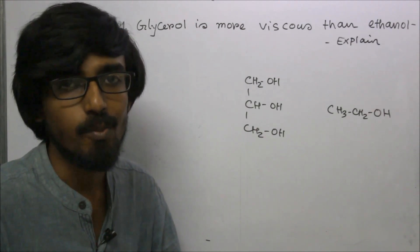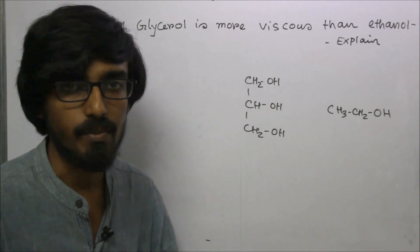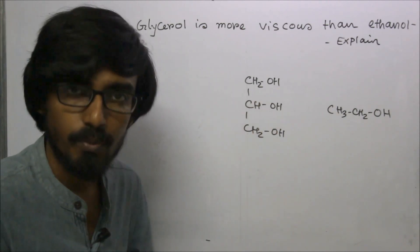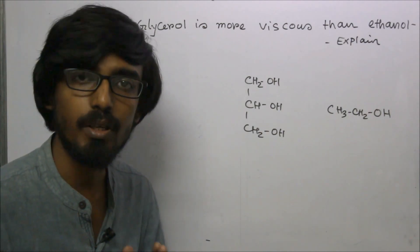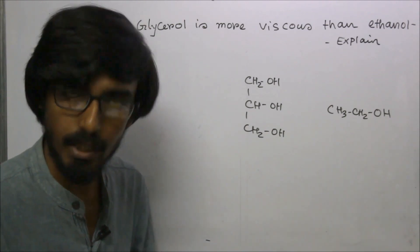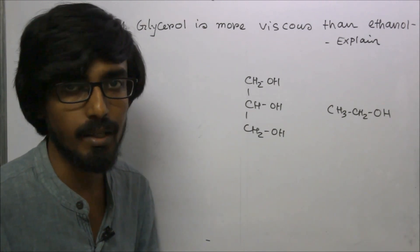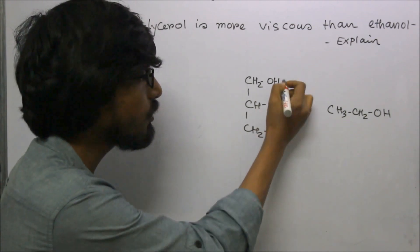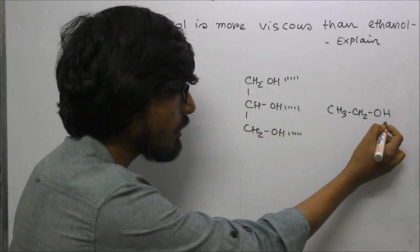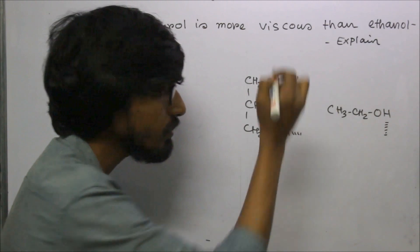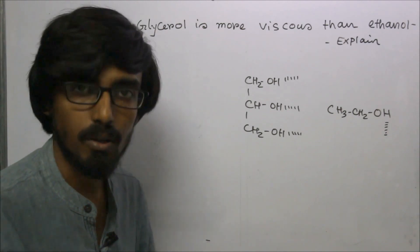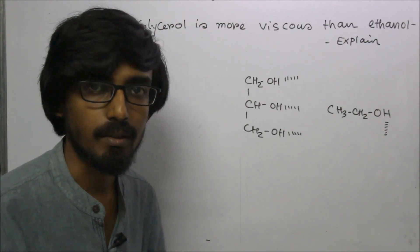First question: glycerol is more viscous than ethanol — explain. Glycerol has three O-H groups, so it can form three hydrogen bonds with three other molecules. Ethanol has only one O-H group, so it forms only one hydrogen bond. Because glycerol forms three hydrogen bonds compared to ethanol's one, glycerol has higher intermolecular attraction, making it more viscous than ethanol.